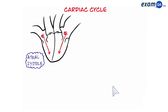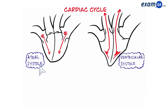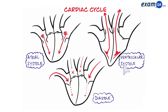The first event that's going to occur is atrial systole, which means the atria will contract. This will be followed by ventricular systole, and that's followed by diastole. So there are three major events in one cardiac cycle, and the order is atrial systole, followed by ventricular systole, followed by diastole. Now let's look at each of these in a bit more detail.